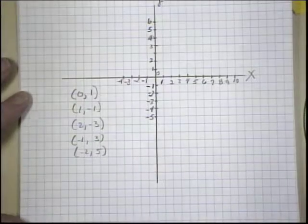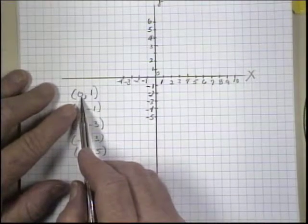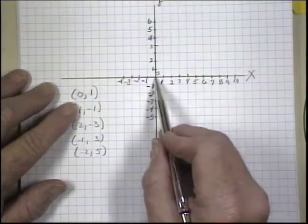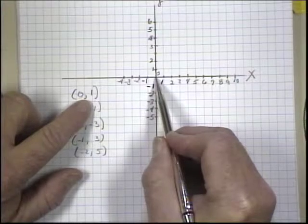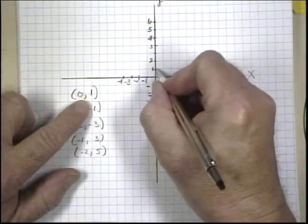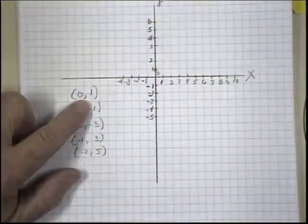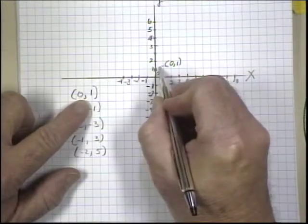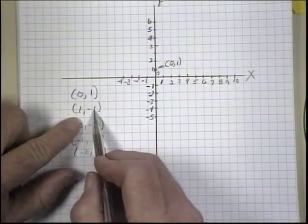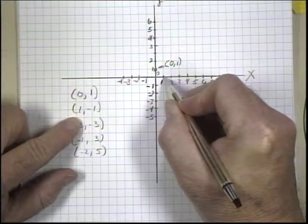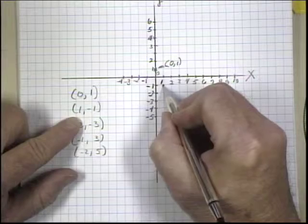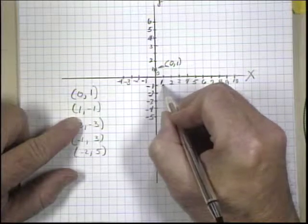Now I can graph these ordered pairs. The first number is my x value. So I'd find the x value on the x-axis. So 0 on the x-axis is right here. My next value is a 1. And that's my y value. So I'd find 1 on the y-axis. That's right here. So I'd have a point right there. This is the point 0, 1, right there. My next point is x equals 1, y equals minus 1. So I'd find my 1 on the x-axis and minus 1 on the y-axis. And where those points meet, right here, 1 on the x minus 1 on the y, this would be my second point.